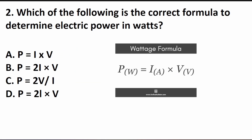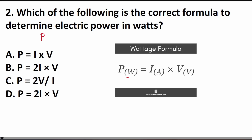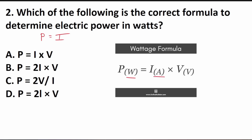Question 2 asks: which of the following is the correct formula to determine electric power in watts? This is a formula you have to know. Power measured in watts equals current (in amps) times voltage (in volts). So the correct formula is A: Power = current × voltage. All the other answer choices are incorrect.